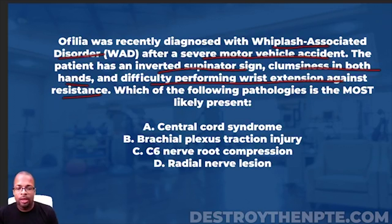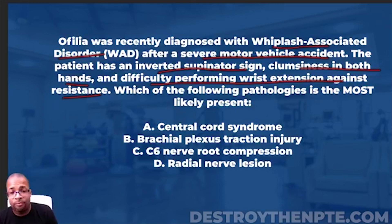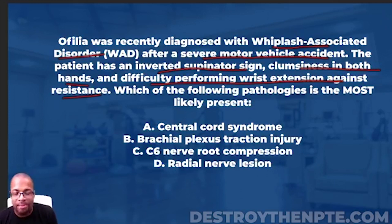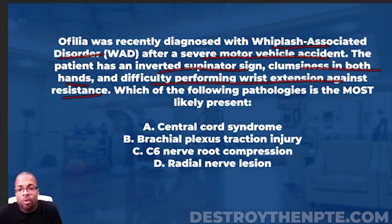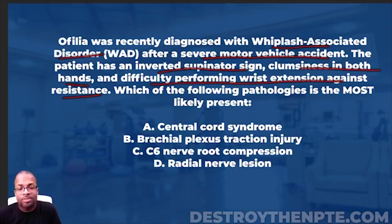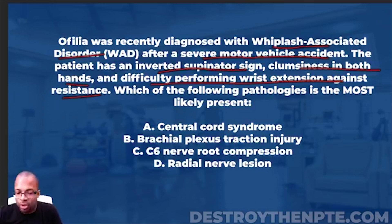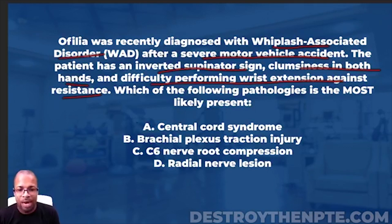Does central cord syndrome explain difficulty with wrist extension? Yes — upper extremity weakness is expected. The specific level of the lesion would determine exactly which movements are affected. Also, the question mentions whiplash associated disorder after a severe MVA, and central cord syndrome is commonly associated with cervical trauma where the head is rapidly forced into hyperextension. I'm putting a check next to central cord syndrome.